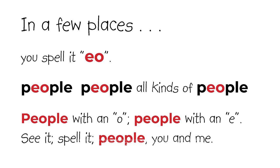In a few places you spell it E-O: people. All kinds of people — people with an O, people with an E. See it, spell it: people! You and me.